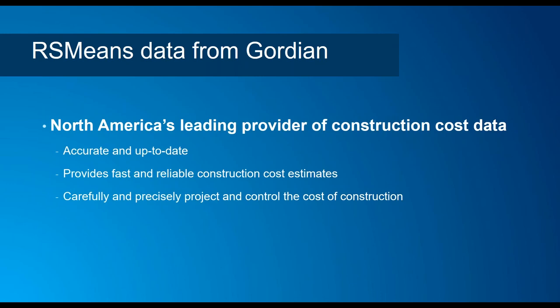RSMeans data is published in a print version. Many of you might know you can still get the printed cost book from RSMeans. In the past, you would use this print book to go through and select your items and cost out your projects, which was a tedious task. Today you can get RSMeans data online, which eliminates the need to manually multiply cost indexes per city. But it can still take time because you still need to look for items line by line.